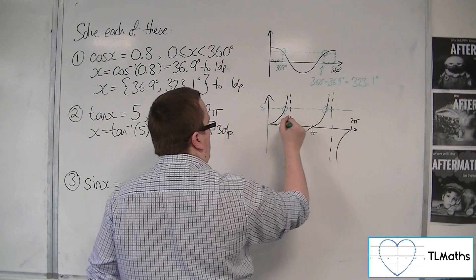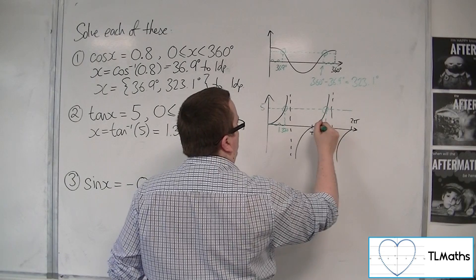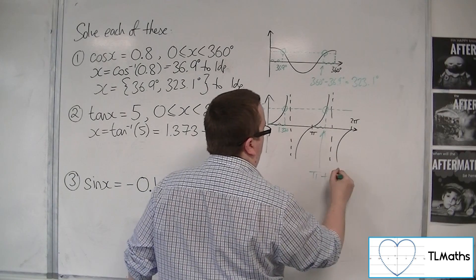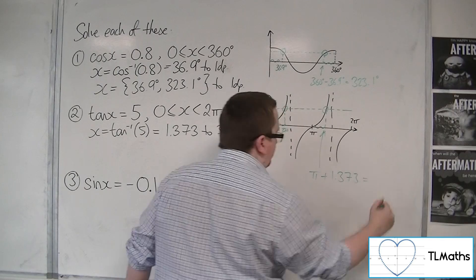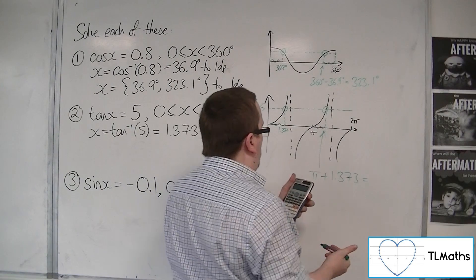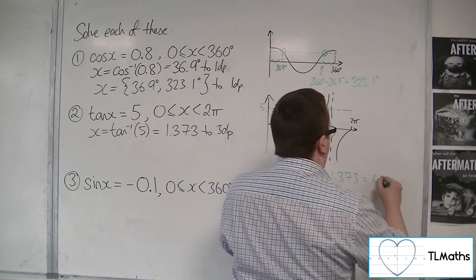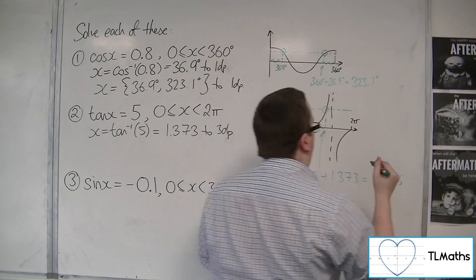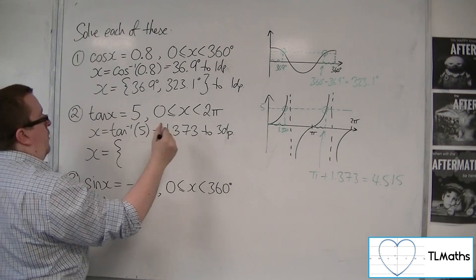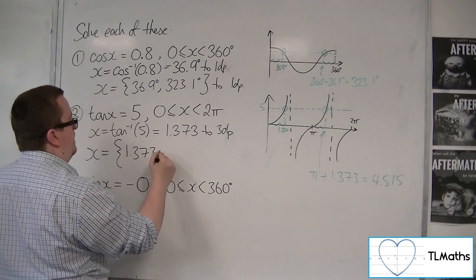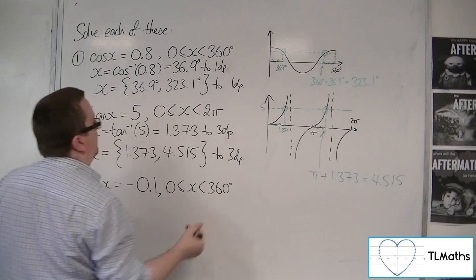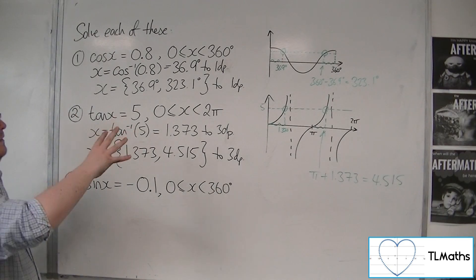And this point, if that distance is 1.373, then this point is also 1.373 away from the π. So we can find that out by doing π plus 1.373. I've still got that original answer on my calculator, so I add π to it and I get 4.515 to 3 decimal places. So we have our two solutions: 1.373 and 4.515 to 3 decimal places. That is the first two.